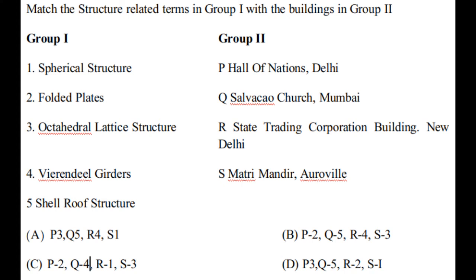Let us solve a few past GATE questions. First question: match the structure-related terms in Group 1 with the buildings in Group 2. In Group 1: spherical structure, folded plates, octahedral lattice structure, virendal girders, shell roof structure.